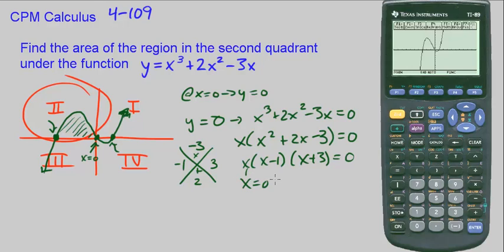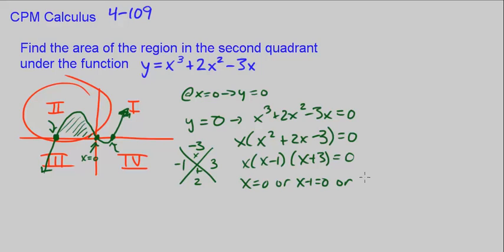So this tells me that x equals 0 from here, or x minus 1 equals 0 from here, or x plus 3 equals 0 from this term. So x equals 0 or x equals 1, or x equals negative 3.